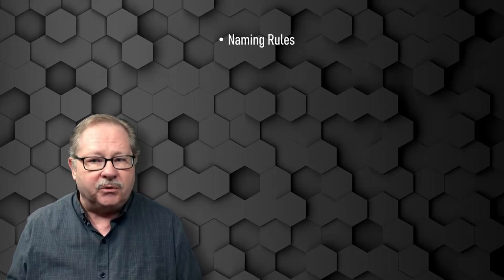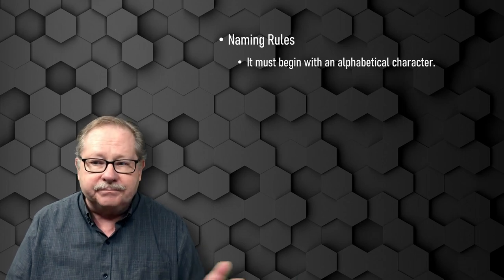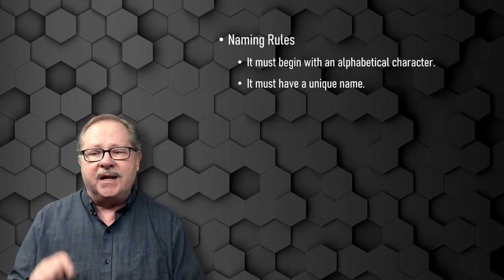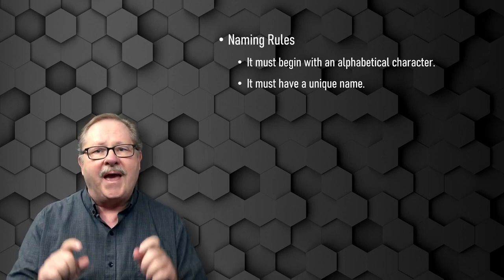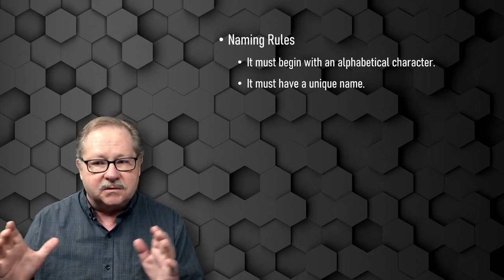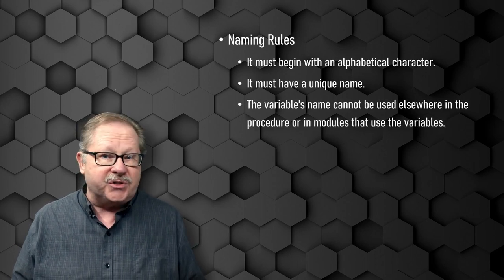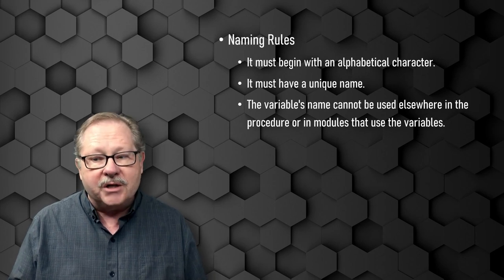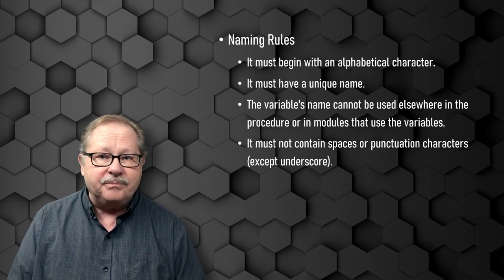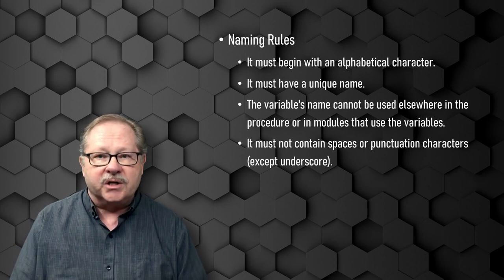What we're going to start with is naming rules. First, they must begin with an alphabetical character — you can't start with a number or a special character of any sort. It has to have a unique name, and this includes names for your variables in your VBA and the names of your objects in your forms, reports, and labels. The variable name cannot be used elsewhere in the procedure or in modules that use the same variables. It must not contain spaces or punctuation characters except an underscore — I'll show you how to use that underscore character a bit later.